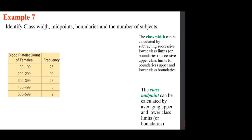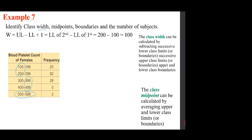We want to identify class width, midpoints, and boundaries from a given table. For class width, there are two ways: take any two consecutive lower limits and subtract, or for one class compute upper − lower + 1. The width here is 100. Note: counting from 100 to 199 inclusive gives 100 numbers, not 99.